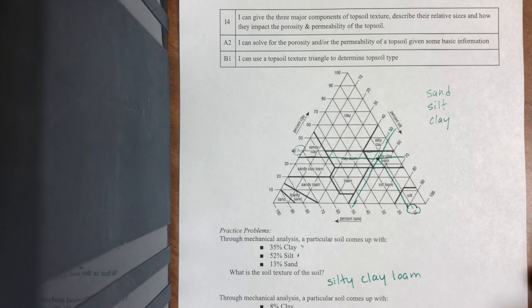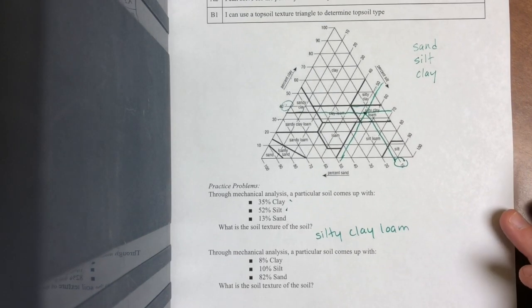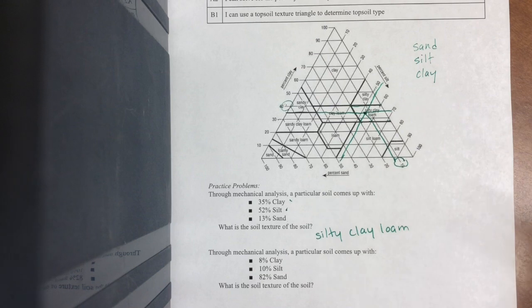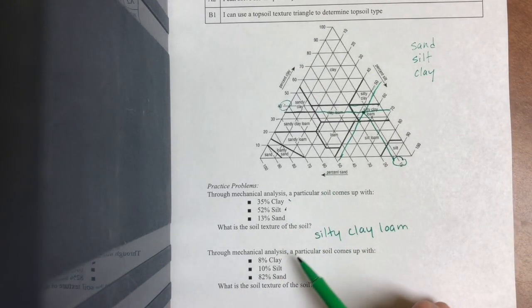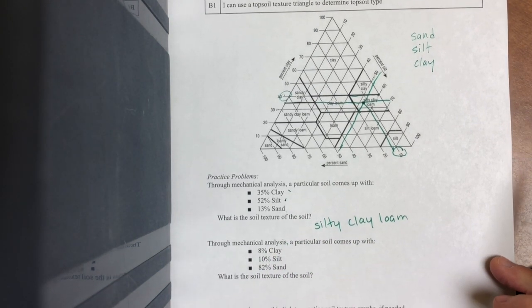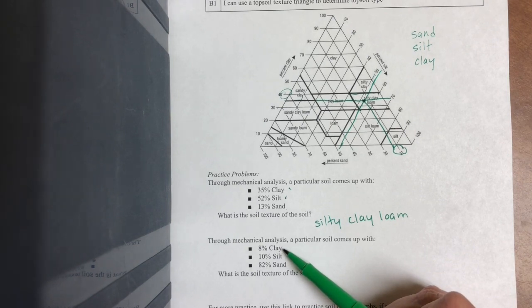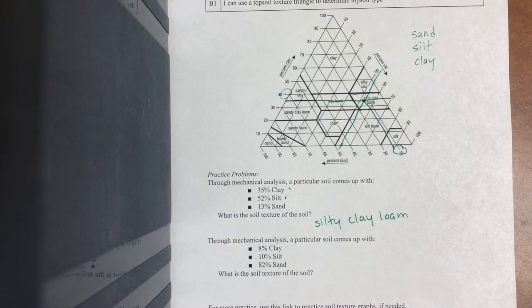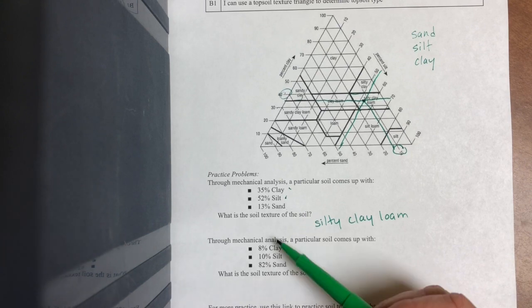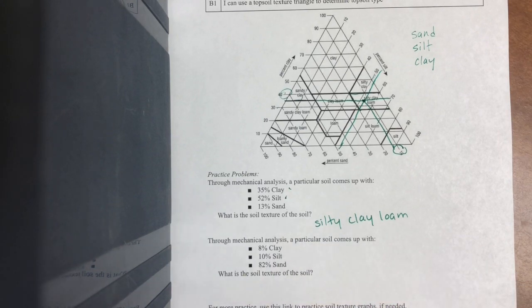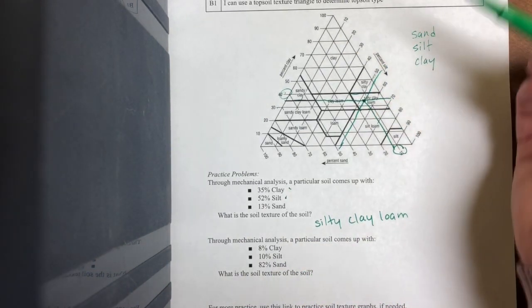Let's go ahead and do the second one on this graph. So the second one is 8% clay. So actually before we even classify it, look at the name: 8% clay, 10% silt, 82% sand. So what is probably going to be the first word in this one? Probably going to be something with sand, because there's so much sand in here. But let's start with the clay, 8% clay, and again it doesn't matter which one you start with.